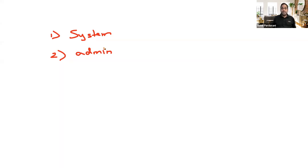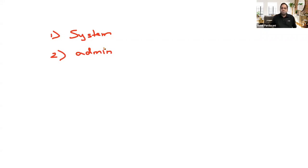The admin context is like the system context in that it is used to manage the system context and other virtual firewalls. The difference is that in admin context, you can allocate an interface for management purposes so you can access the system context from the network. Instead of physically connecting a console, with the admin context you can allocate the management interface, enable SSH or Telnet, and remotely connect to manage or create virtual firewalls. Without the admin context, it won't let you create virtual firewalls — it will error saying admin context is required.